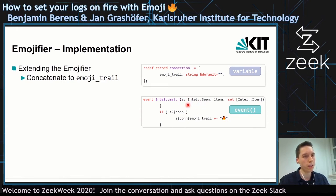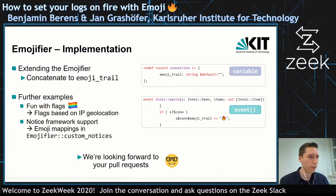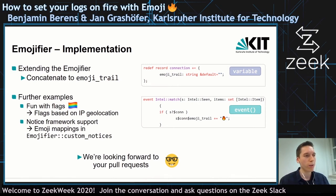In the scene record, you can access the connection that is involved. The only thing you have to do if you want to add your own emoji is to concatenate to that emoji trail in the connection. We recently also added fun with flags that will add flags based on the geolocation of the responder and originator IPs to that emoji trail.